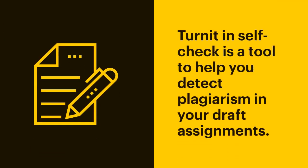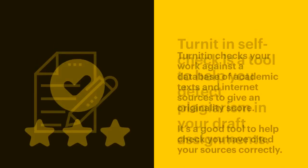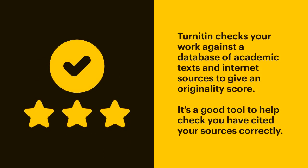Turnitin Self Check is a tool to help you detect plagiarism in your draft assignments. Turnitin checks your work against a database of academic texts and internet sources to give an originality score. It's a good tool to help check you have cited your sources correctly.